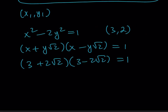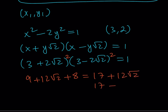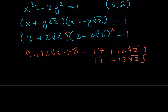So (3, 2) is a solution — but how do you get the next one? You have the formula, but if you prefer, you can square the expression (3 plus 2√2). Squaring gives 3 squared plus 2·3·2√2 plus (2√2)² equals 9 plus 12√2 plus 8 equals 17 plus 12√2. The conjugate gives 17 minus 12√2. This means that (17, 12) is another solution to this Pell's equation.